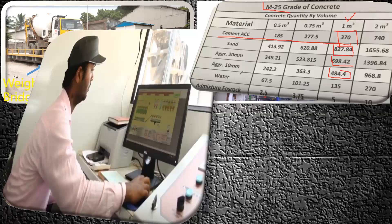For one cubic meter of M25 concrete, you also add 135 liters of water and 5 units of admixture (possibly in liters). This is the batching chart for one cubic meter of concrete.